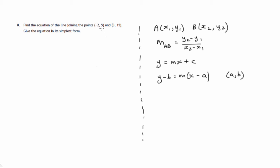The first fact we'll need to find out is the gradient of the line joining these two points. The two points are negative 2, 5 and 3, 15. The gradient of the line joining these two points is the y difference over the x difference. Let's take 15 minus 5 — the two y coordinates. And since we started with this point, we must start the x difference here also, so 3 minus negative 2.